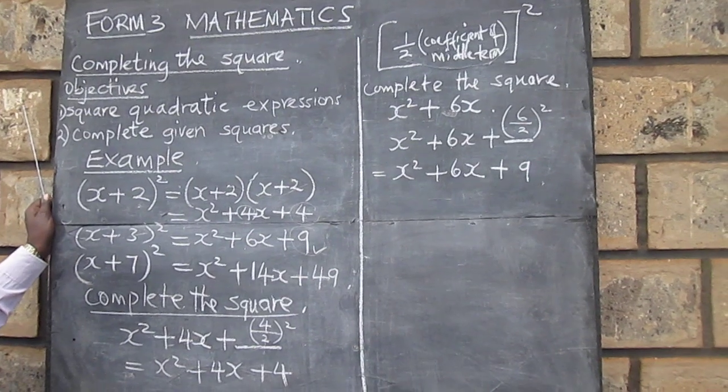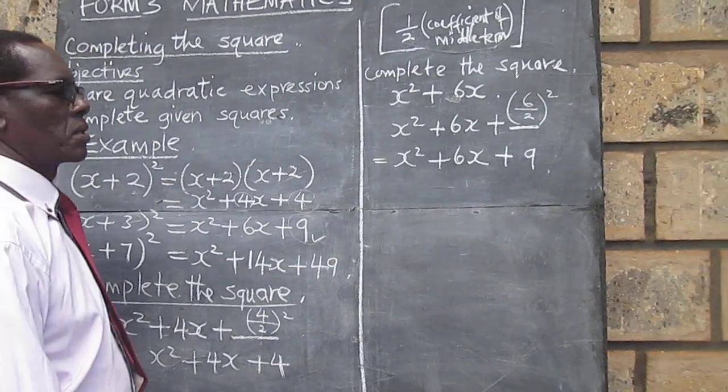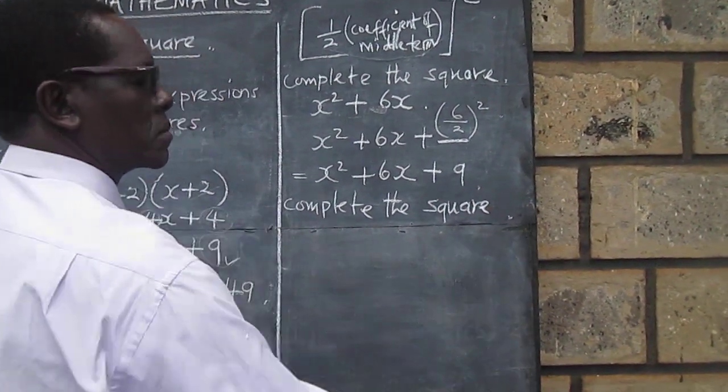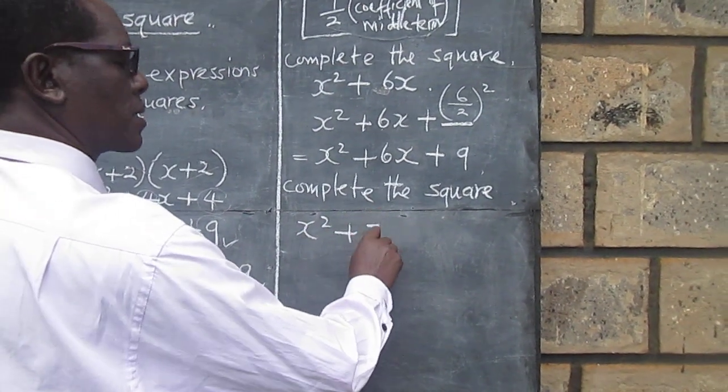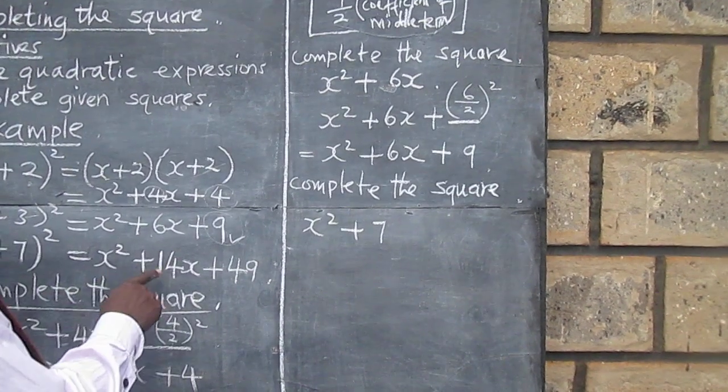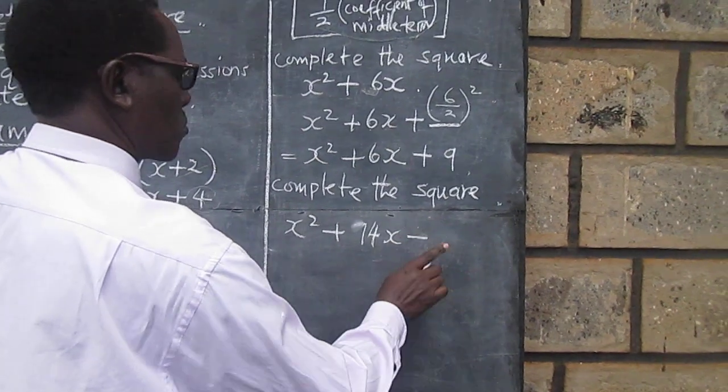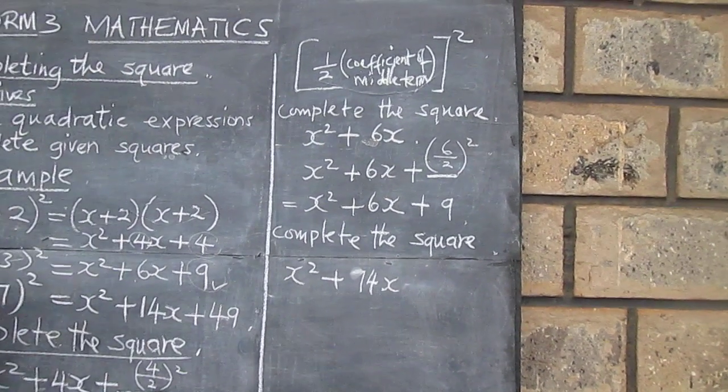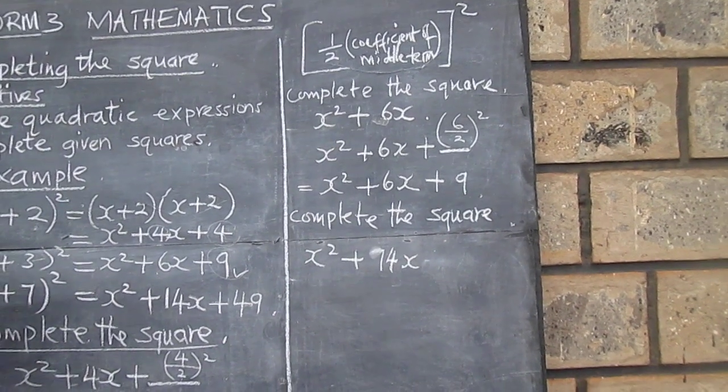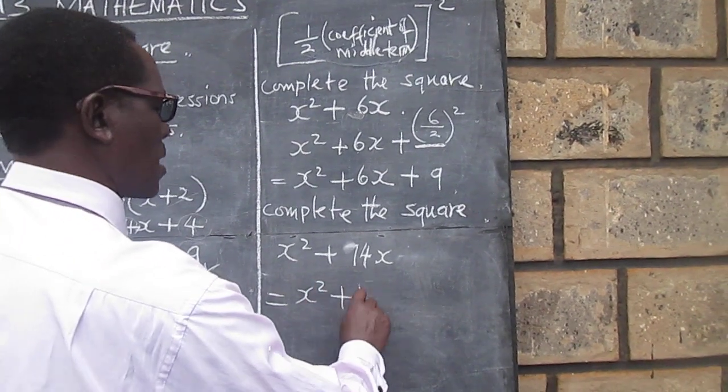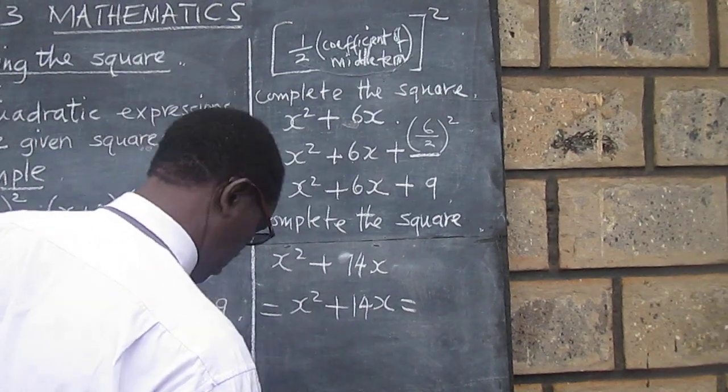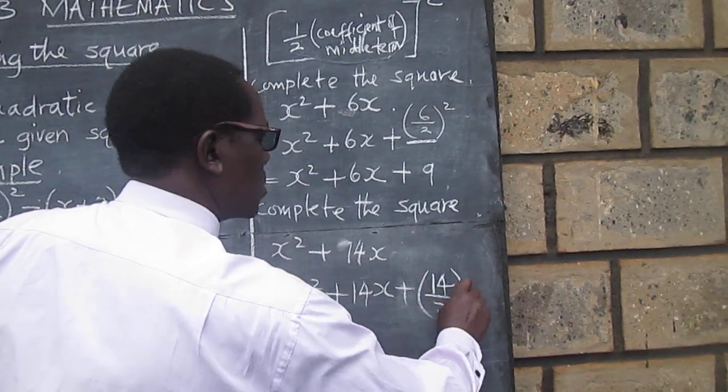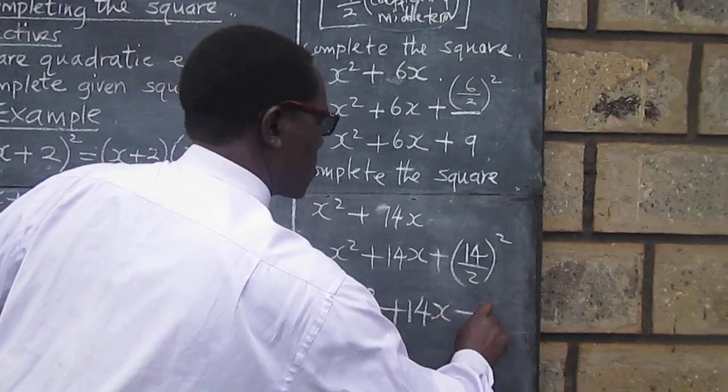We can confirm further with the last expression where we would like to complete the square once more for x squared plus 14x. This will give us therefore x squared plus 14x plus 14 over 2 squared, and this finally becomes x squared plus 14x plus 49.